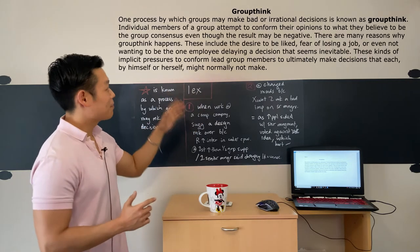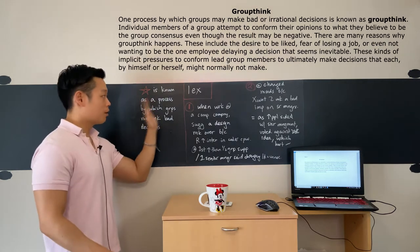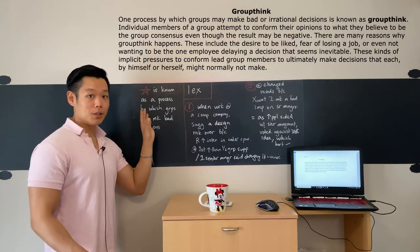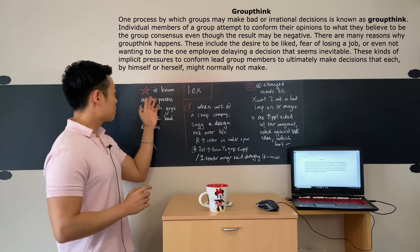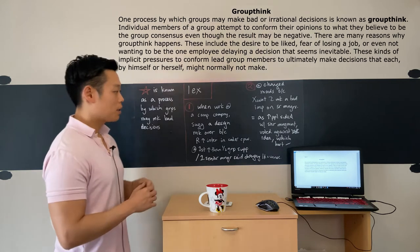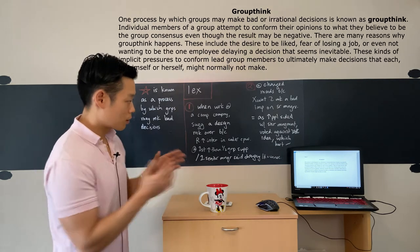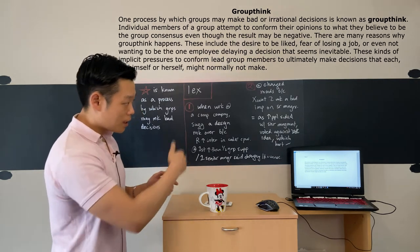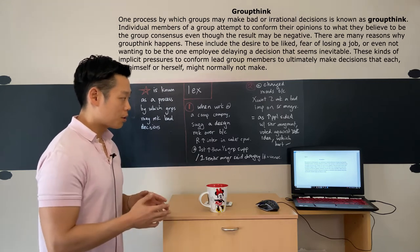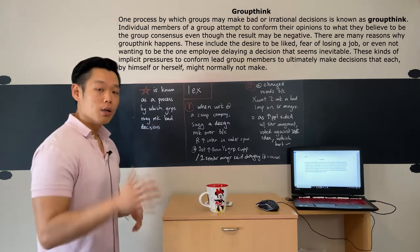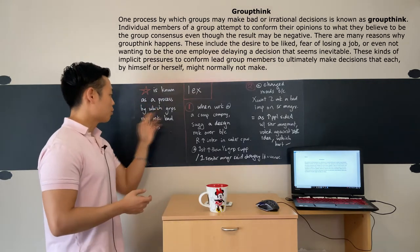Alright, that's the reading passage we'll be looking at today. The topic is groupthink. The star symbol over here to the left is for the reading passage's information, which in this case is going to be the definition of the topic. The easiest way to find the definition in the reading passage is to look for the topic word first. So let's look for groupthink. I see it at the end of the first sentence: one process by which groups may make bad or irrational decisions is known as groupthink.